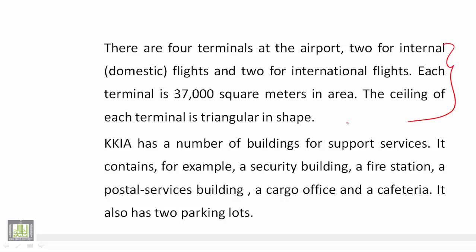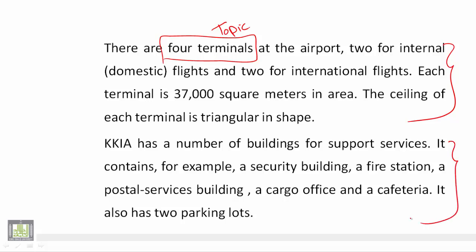Now let's move to another paragraph. The topic can be found in the first sentence, so let's read it: 'There are four terminals at the airport — two for internal domestic flights and two for international flights.' We see that the topic of this paragraph is 'four terminals', because the rest of the paragraph talks about these four terminals.